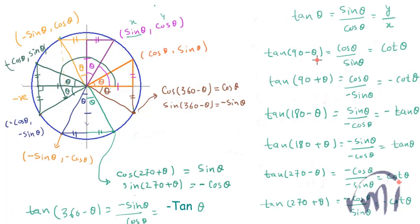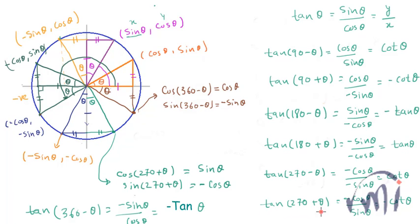Similarly, you can write down the behavior of cot θ in all these different quadrants. You just have to replace tan by cot and cot by tan. So: cot(90 − θ) = tan θ, cot(90 + θ) = tan θ, cot(180 − θ) = −cot θ, cot(180 + θ) = cot θ, cot(270 − θ) = tan θ, cot(270 + θ) = −cot θ, and cot(360 − θ) = −cot θ.